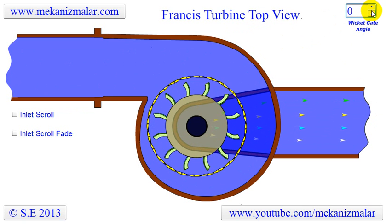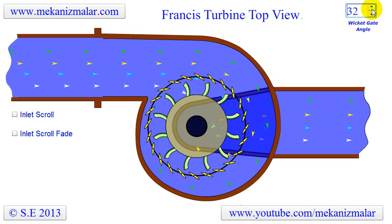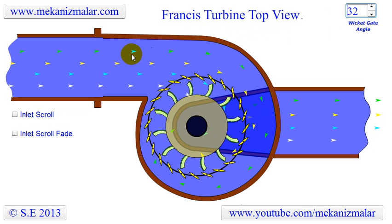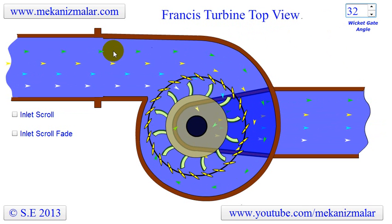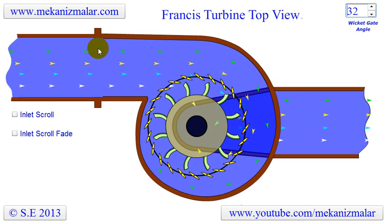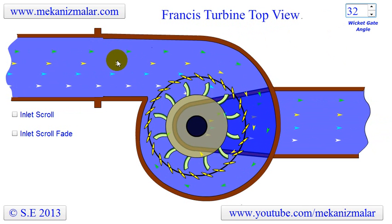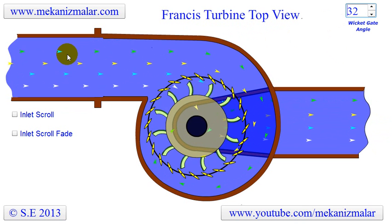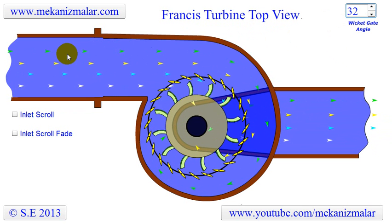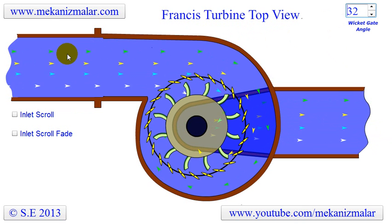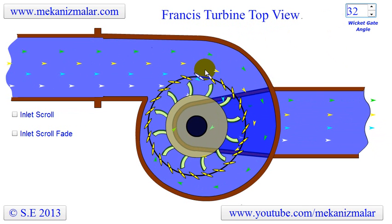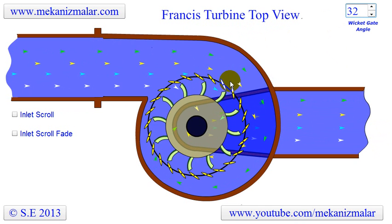The Francis turbine fills the large gap between the Pelton and Kaplan and it is widely used. They operate in waterhead from 10 to 600 meters, which is almost from 33 to 2,000 feet. They are primarily used for electric power generation. Their power output can be calculated from the waterhead and flow rate, and typically ranges from 10 megawatts to more than 700 megawatts.